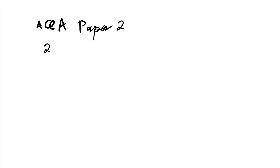This is AQA A-Level Physics Paper 2 from 2021, Year 2 content. As per usual, can't show the paper on screen — otherwise AQA will get the whole channel deleted, like they almost did in the past. Other links to the paper and mark scheme are in the description. If you find this helpful then please leave a like, and if you really find it helpful then consider putting a tip in the jar by clicking the super thanks button — it really helps me keep making these videos.